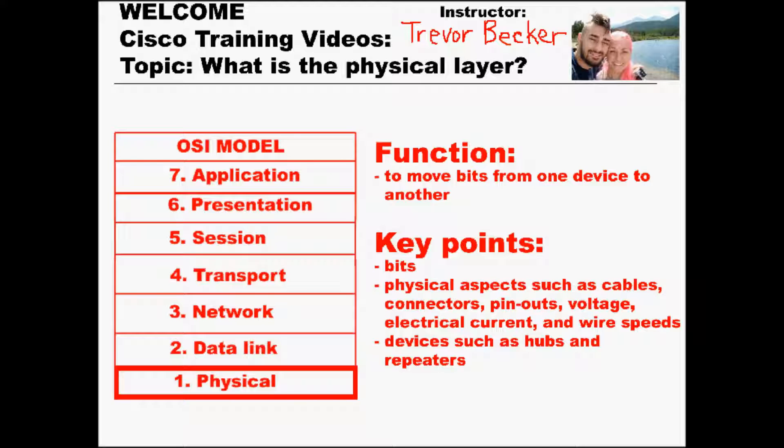The physical layer is almost entirely documented in standards that are written by other organizations, and these describe the physical characteristics of data transmission. These characteristics include types of cables, connectors, pinouts, voltage, electrical currents, and wire speeds.